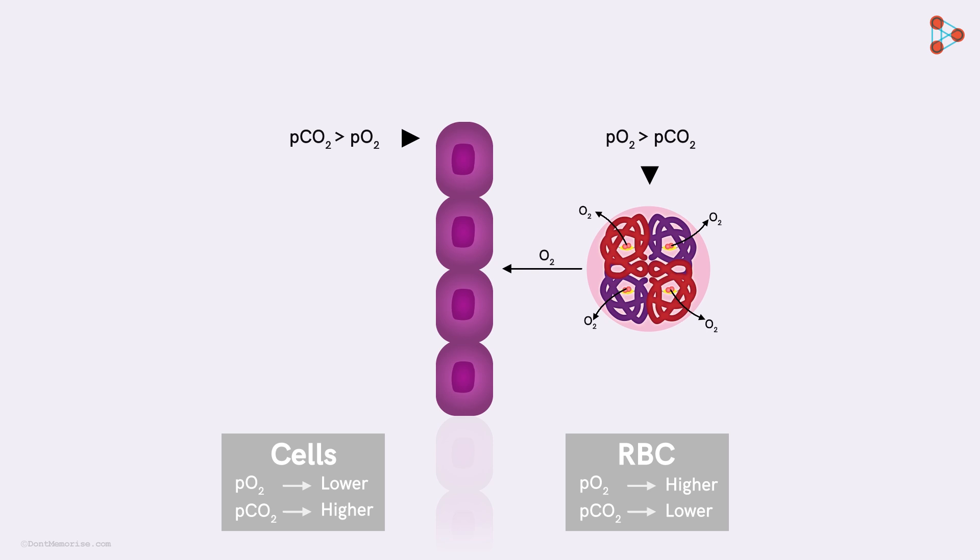Thus, the oxyhemoglobin structure will get disrupted and the hemoglobin protein will again get altered. Now, it is all set to receive carbon dioxide molecules for which it has equal affinity.